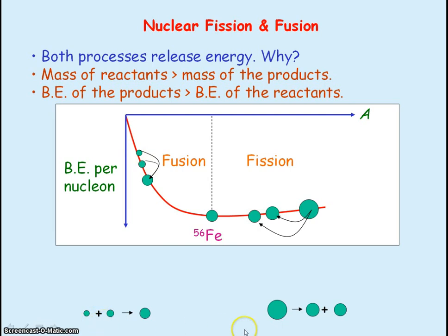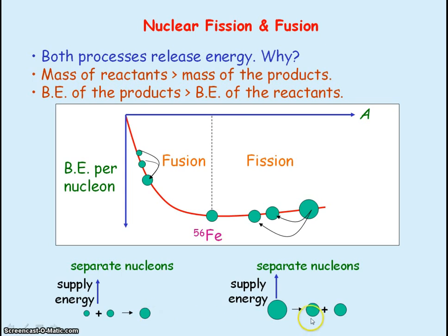So if we consider the fusion reaction and fission reaction, if we wanted to separate out the nucleons that make up the reactants we would need to supply energy. But then if we want to make the products from the nucleons energy would be released and in both these processes more energy is released to form the products from the separated nucleons than the energy that was supplied to separate out the nucleons from the reactants and as a result both processes release energy.